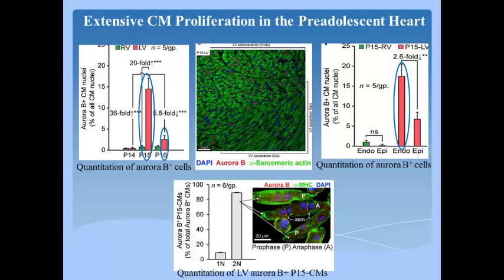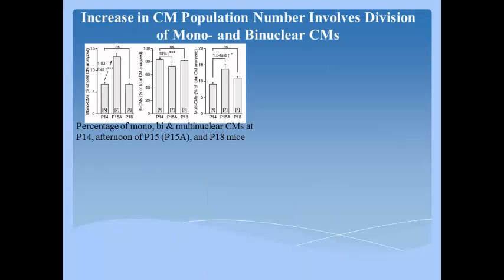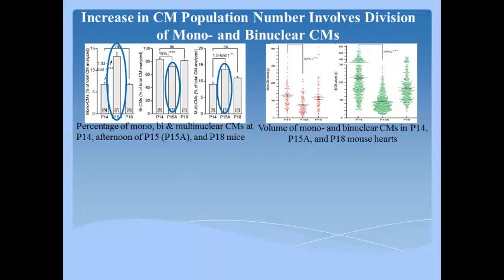Approximately 10% of the total mitotic P15 cardiomyocytes were mononuclear and 90% were binuclear. Authors calculated the number of mono-, bi- and multinuclear cardiomyocytes added to the ventricles between the morning of P14 and the afternoon of P15. The most striking change was a 1.93-fold increase in mononuclear cardiomyocytes. Binuclear cells went down by 15% and multinuclear cells went up by 1.5-fold, with a decrease in volume of mono- and binuclear cells by 45% and 60% respectively.